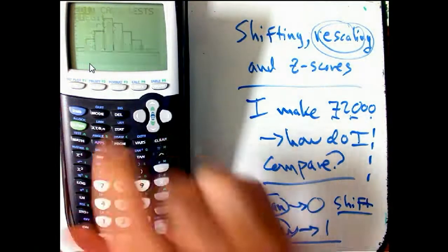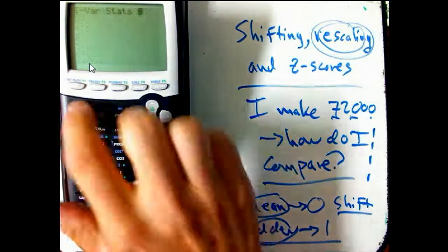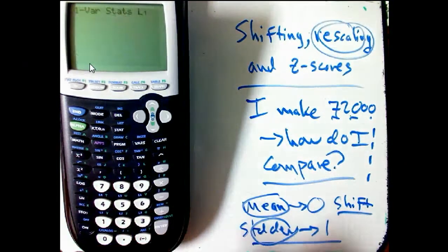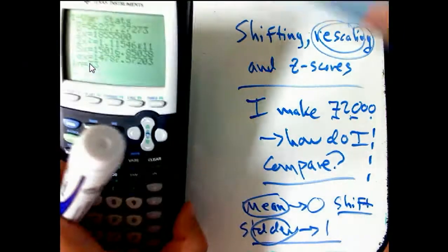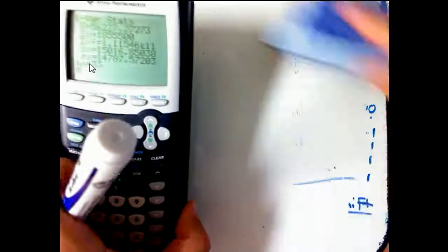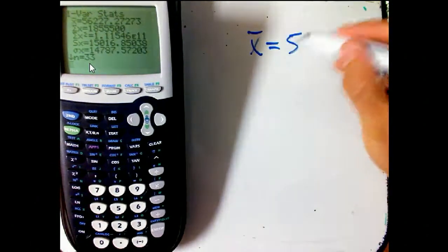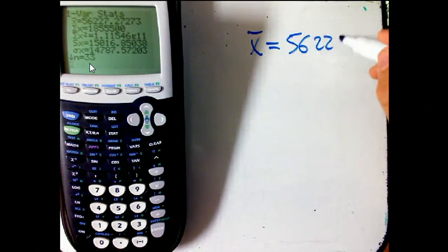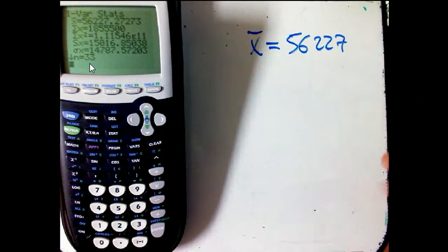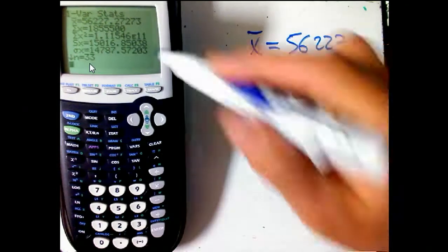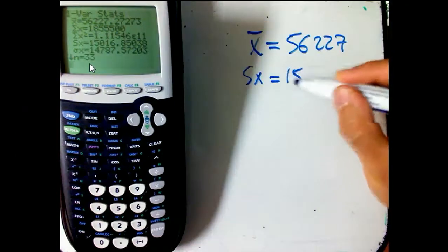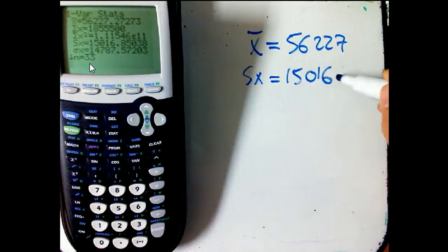Let's go ahead and go to stat, calc, one-var stats on L1. I need the eraser here. Let's go ahead and write that down. So the mean, x-bar, is 56,227, $56,000, and then Sx, the standard deviation, is 15,016, I would say 15,017, about $15,000.